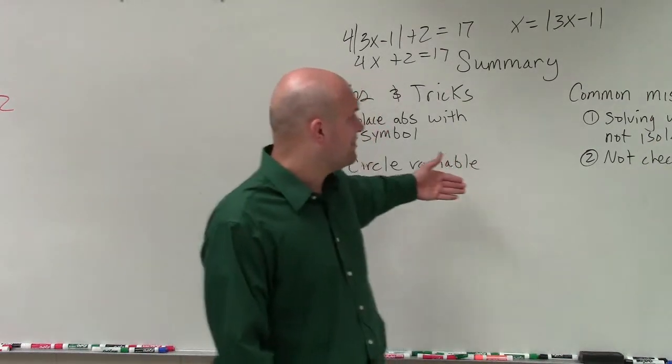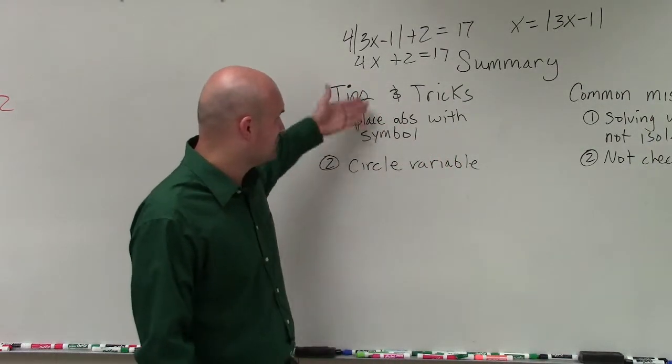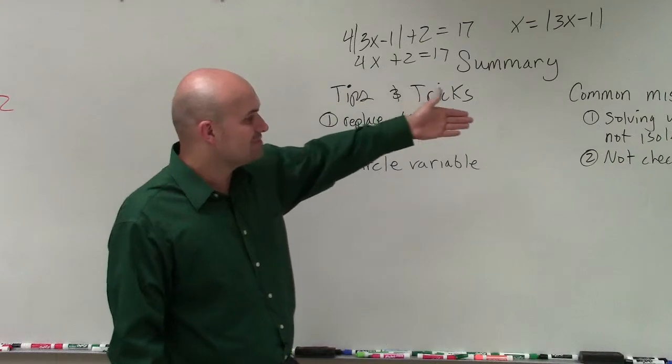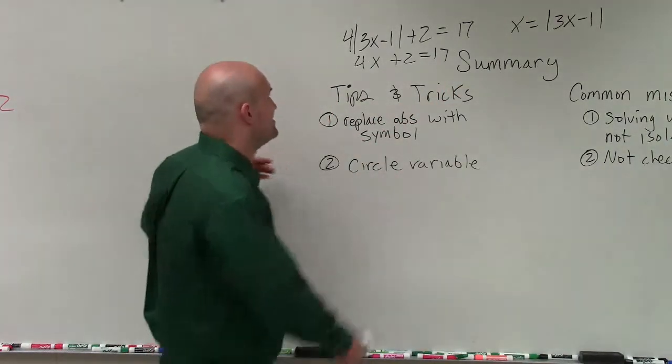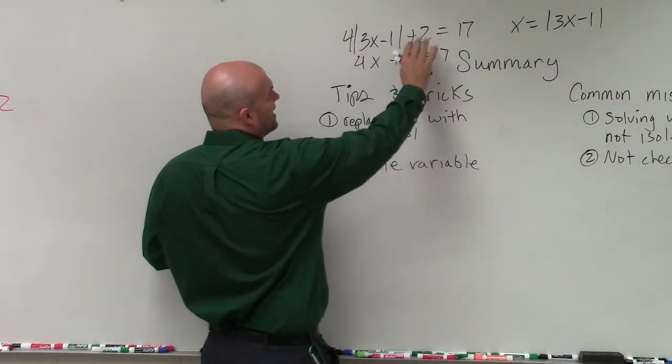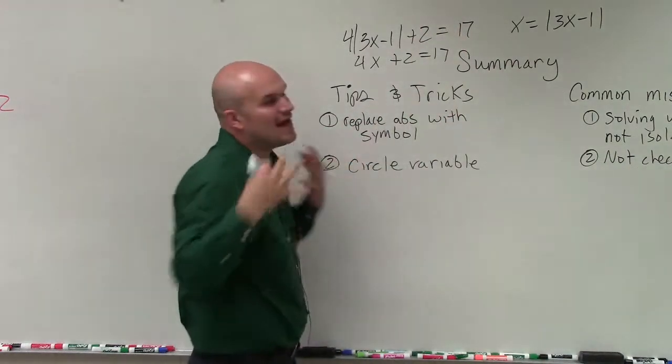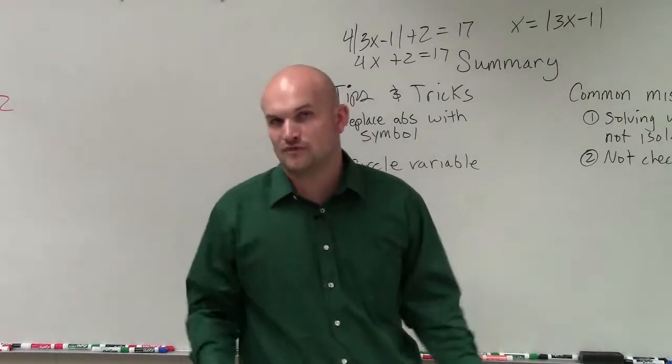The common mistakes, I kind of hinted both with actually tip and tricks, is you've got to solve for that absolute value. You can't create your two cases. I've seen so many students have an equation like this, and then they have it equal 17, and then have it equal negative 17. You have to isolate the absolute value first.